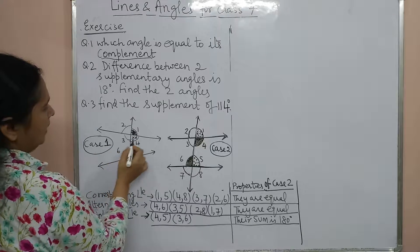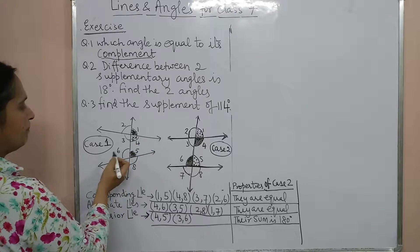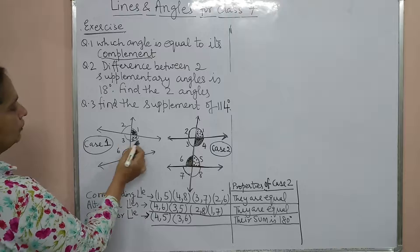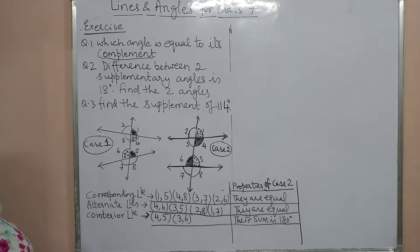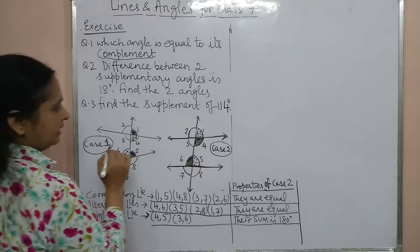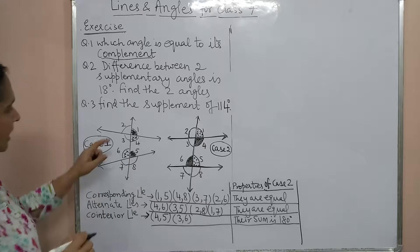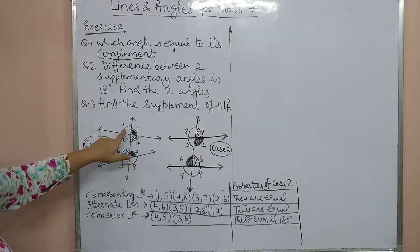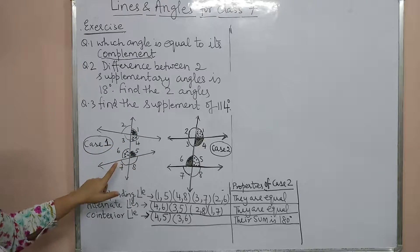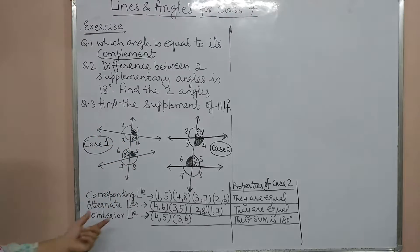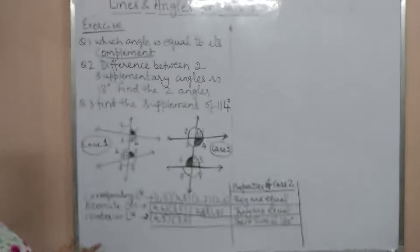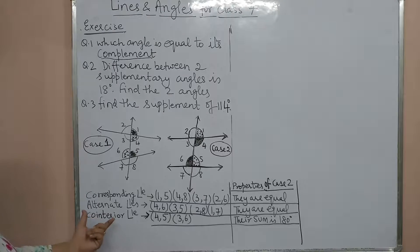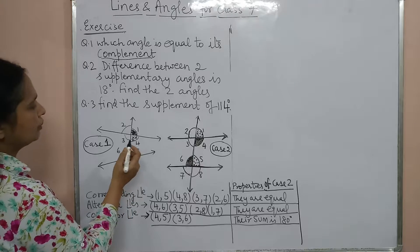Alternate angles: taking one angle, its pair comes on the other side — those are alternate angles. The pairs of alternate angles are: 3 and 5, 2 and 8, 1 and 7. For co-interior angles — interior means only the 4 angles in the interior region.